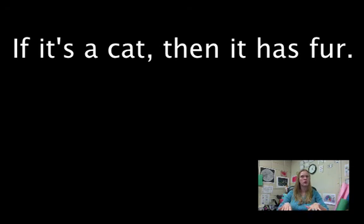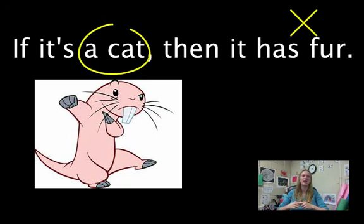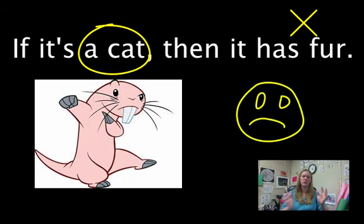Something that would not be a counter example is like if I showed you a picture of a naked mole rat. It doesn't have hair but it's not a cat. So that's not a counter example because we have to have 'if it's a cat' - that part has to be true - and then we're showing that 'then it has fur' is wrong. And we're going to talk more about that later but that's a basic example of if-then statements.